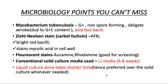TB is an acid-fast bacillus (AFB). The staining technique used is Ziehl-Neelsen staining, and the compound used is carbol fuchsin. After staining, you will see bright red bacilli — this stain works because of mycolic acid present in the cell wall. For fluorescence staining, remember two names: auramine and rhodamine, which are cheaper and good for screening.